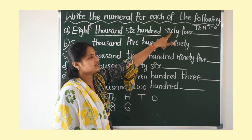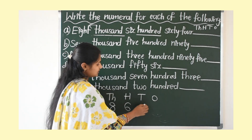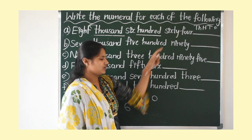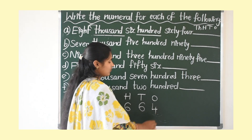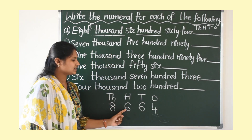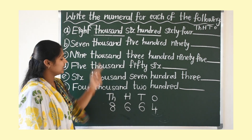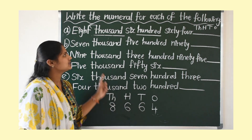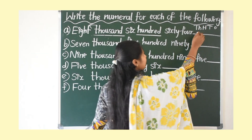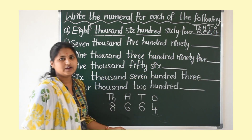Next: 64. 60 means how many 10's make 60? 6 tens make 60, so write 6 in the 10's place. And 4 — write 4 in the 1's place; 4 ones make 4. So the numeral for eight thousand six hundred sixty-four is 8664.